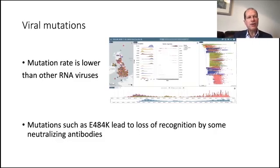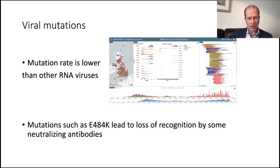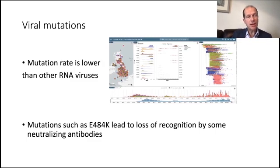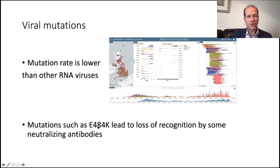But the virus can mutate. The mutation rate for this virus is low — lower than influenza and HIV — and that gave us a lot of hope initially. But we now know that this rate of change of one or two mutations per month can accumulate and lead to many different subtypes and variants of the virus. One of these variants, the E484K variant, can lead to loss of some of those antibodies and loss of some immune recognition.